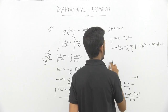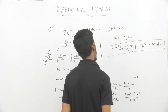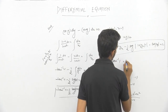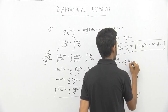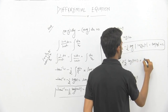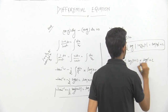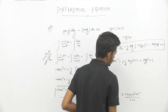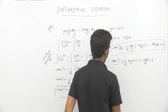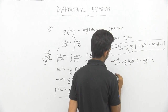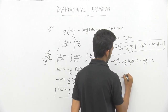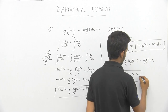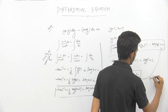Now we have the general solution. For the particular solution, put y = 1 when x = 1: tan⁻¹(1) - (1/2)log(1 + 1) = log(1) + c. So π/4 - (1/2)log 2 = 0 + c. Therefore c = π/4 - (1/2)log 2. Substituting this c value back gives the particular solution.